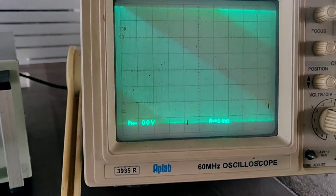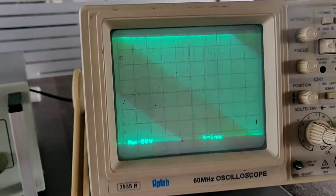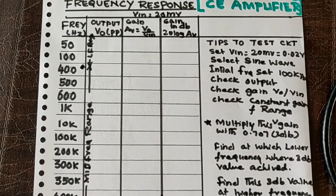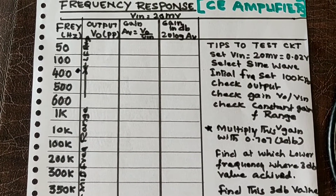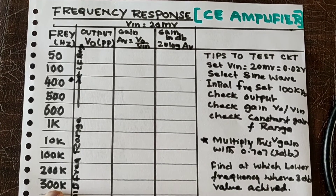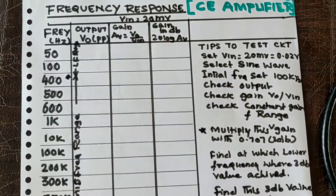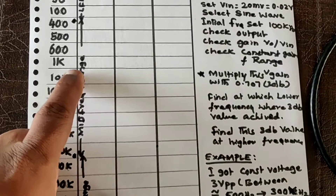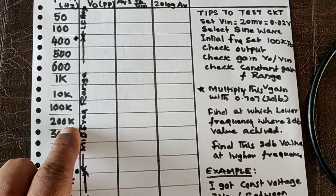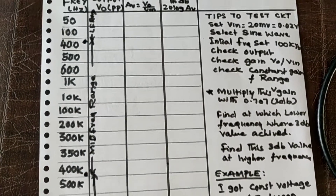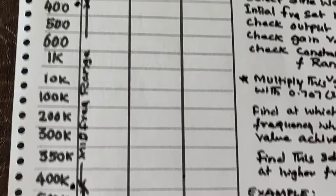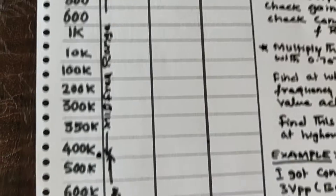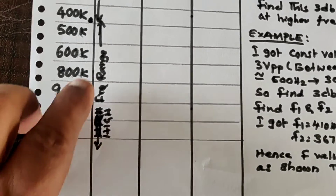Now, how to start the experiment? We observe that the circuit is working. The very next thing is to observe and fill up the frequency response characteristics in the relevant tabular columns. There is a frequency column starting from 50 hertz to a maximum of 2 megahertz. In the output characteristics, there are three ranges: the low frequency range, the mid-frequency range, and the high-frequency range.